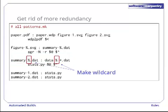Just as a reminder, the percentage is a MAKE wildcard. It matches the same thing on the left and right side of a pattern rule. Star is a shell wildcard. It matches zero or more characters in a filename when it's evaluated.